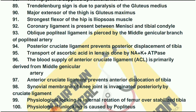The blood supply of the anterior cruciate ligament is primarily derived from the middle genicular artery. The anterior cruciate ligament prevents anterior dislocation of the tibia. The synovial membrane of the knee joint is invaginated posteriorly by the cruciate ligament. Physiological locking is internal rotation of the femur over stabilized tibia. Physiological unlocking is caused by popliteus.